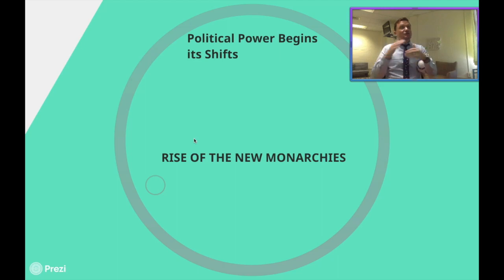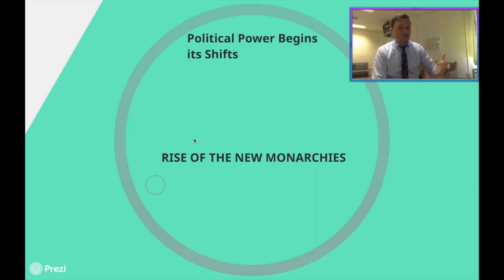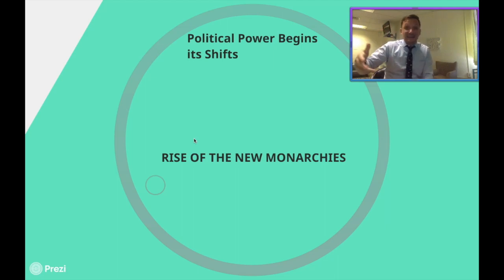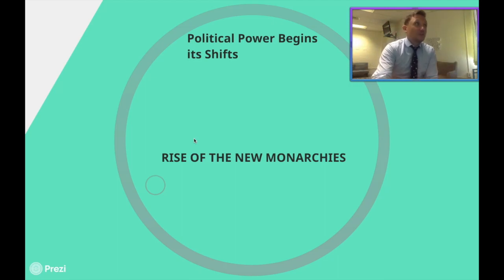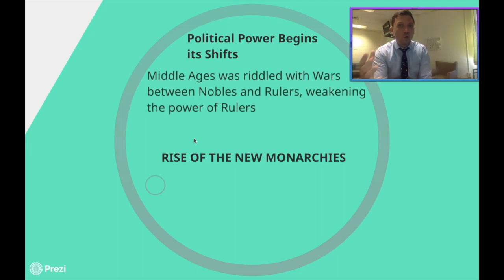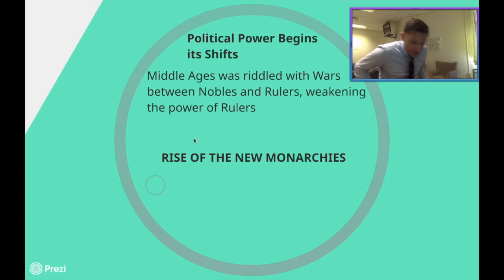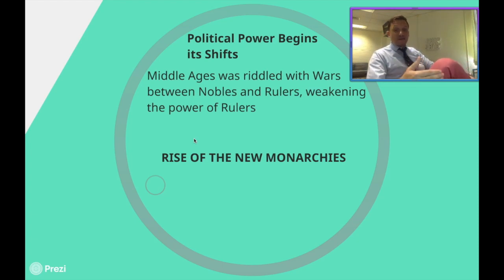Political power is starting to shift. During the Middle Ages — I know it's annoying that we keep popping back there, but you can't understand the Renaissance without understanding where we came from. When you think of leaders of Europe: kings, queens, princes, duchesses, dukes, earls — you think of them as the ruling class, uncompromising and in charge. But during the Middle Ages, that wasn't really the case. There were wars left and right between nobles and rulers. Kings would have wars with nobles all the time, just trying to grow their power and influence, while nobles wanted to take kings down so they could install their own family on the throne to control the economic center of a territory.